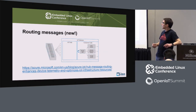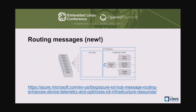A new thing we rolled out late last year is the ability to route messages to different services on the Azure cloud. Before, all your telemetry messages were randomly assigned to partitions — basically queues that you can read from and that are persistent so you can move a cursor and go back and forth in your messages. We got feedback that it'd be nice to do some basic routing ourselves: configure endpoints, and then based on message properties we would do the routing so you don't have to write code for that.